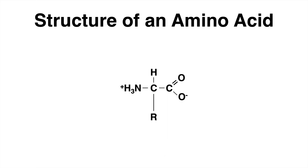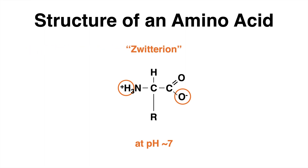You may have noticed that the amino group is positively charged and the carboxyl group carries a negative charge. The reason for that is the physiological pH in our cells, which is around 7. And at this pH, the molecule is referred to as a zwitterion.